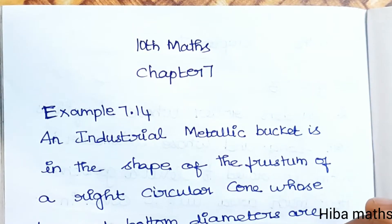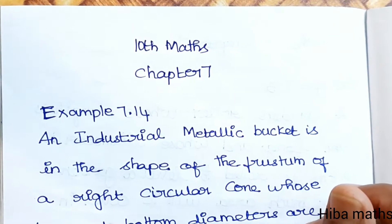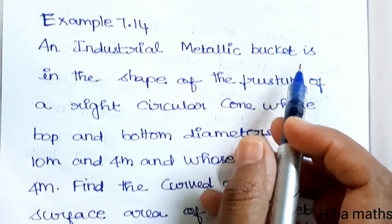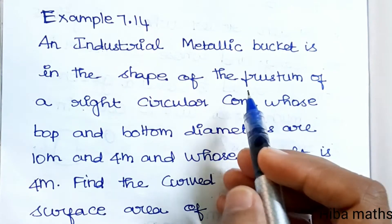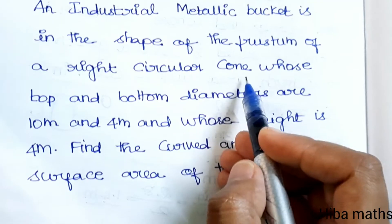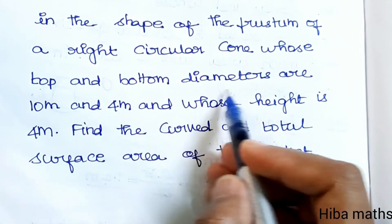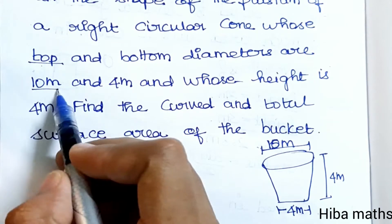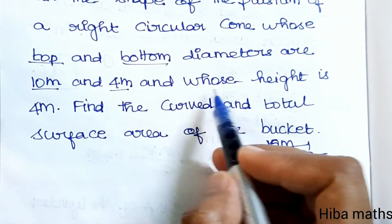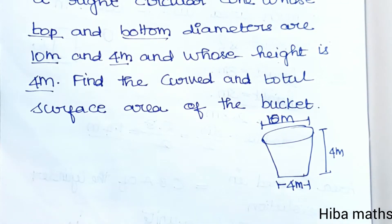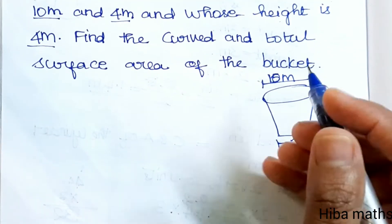Hello students, welcome to Hiba Maths. 10th Standard Maths, Chapter 7, Example 7.14. An industrial metallic bucket is in the shape of a frustum of a right circular cone whose top and bottom diameters are 10 meter and 4 meter and whose height is 4 meter. Find the curved and total surface area of the bucket.